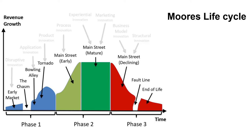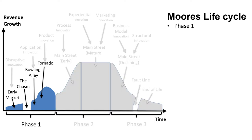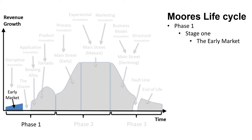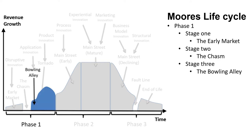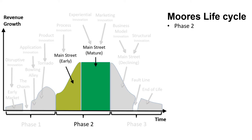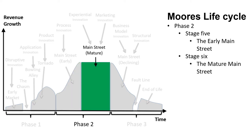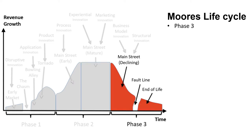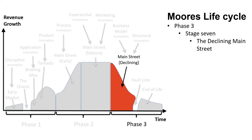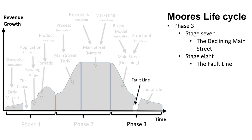Each main phase consists of individual stages and various forms of innovation. The first phase consists of four stages: Stage 1, the early market; Stage 2, the chasm; Stage 3, the bowling alley; and Stage 4, the tornado. The second phase consists of two stages: Stage 5, the early main street; and Stage 6, the mature main street. The third and last phase consists of three stages: Stage 7, the declining main street; Stage 8, the fault line; and Stage 9, the end of life.